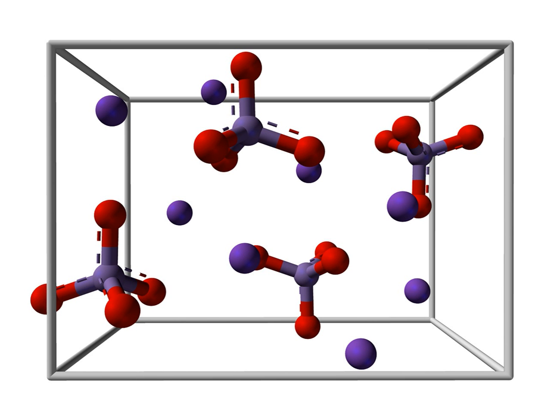Structure: K2MnO4 is a salt consisting of K+ cations and MnO4^2- anions. X-ray crystallography shows that the anion is tetrahedral,